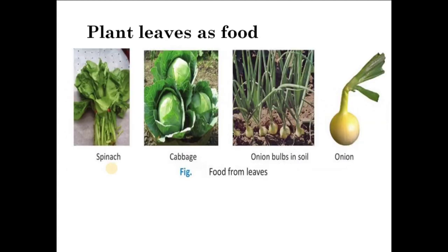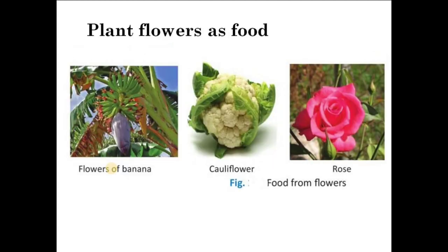Some plant leaves that we eat as food are spinach, cabbage, onion leaves, methi (also known as fenugreek), and mustard leaves. All these are included in our diet as vegetables. In fact, tea that we consume comes from dried leaves of the tea plant. Flowers of certain plants are also eaten. Some of these include banana flower and cauliflower. Rose petals are used in preparing jam known as gulkand, which is often taken with medicines for its medicinal value.